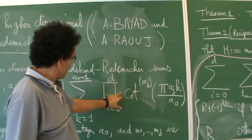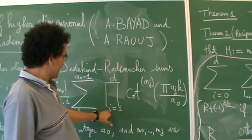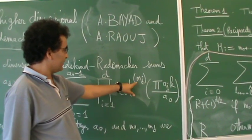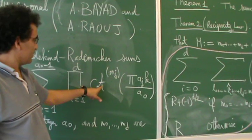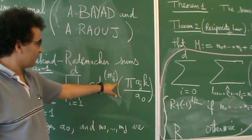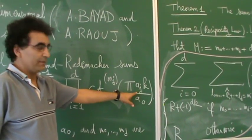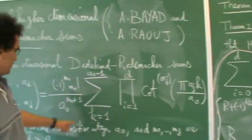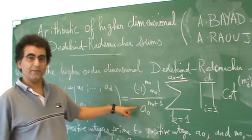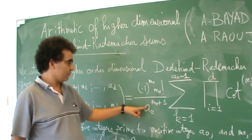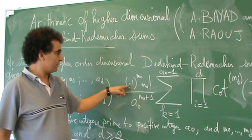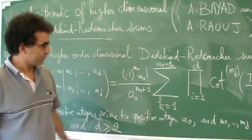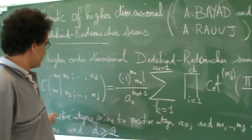Here the product is over E between 1 to D, and the cotangent derivative in G_m — the derivative of cotangent evaluated at the point p·a_k over A0 — all divided by the parameter A0 to the power M0 plus 1, multiplied by minus 1 to the M0, factorial M0.